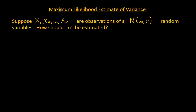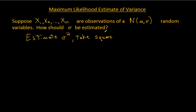Notice the title here is 'maximum likelihood estimate of variance.' I'm going to go about this by estimating the variance and then taking the square root. So even though my goal is really to estimate the standard deviation — because that's what we use more often and what makes a little bit more sense to us than the variance — we're going to have to get the variance first.